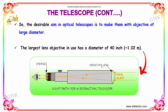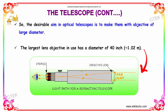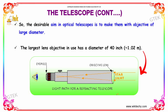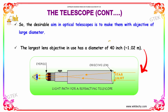The desirable aim in optical telescopes is to make the objective of as large a diameter as possible. The largest lens objective in use has a diameter of 40 inches, that is 1.02 meters.